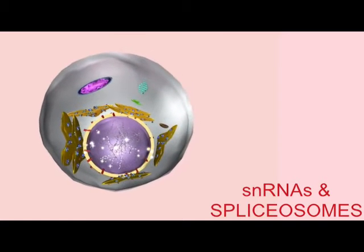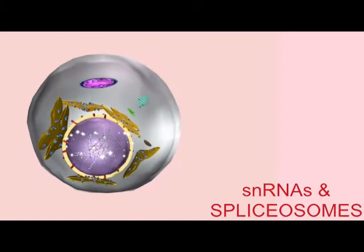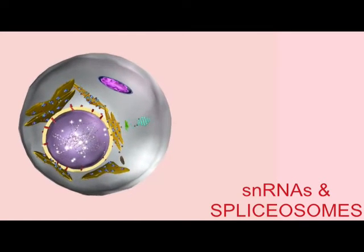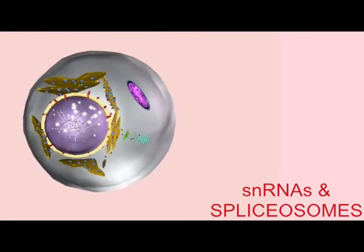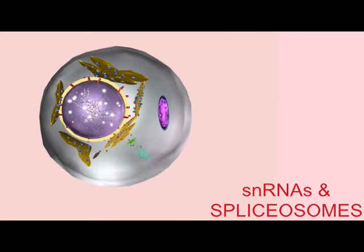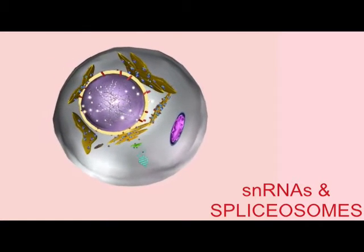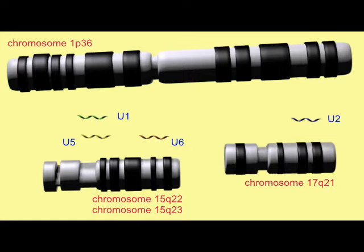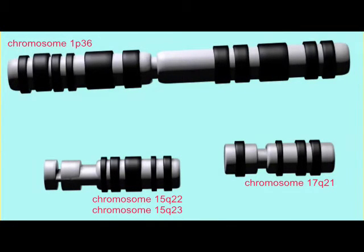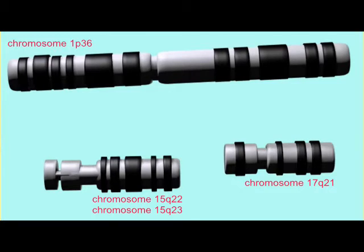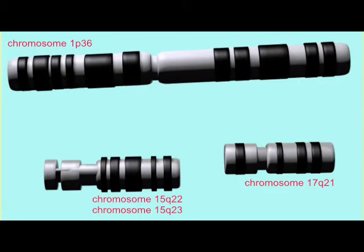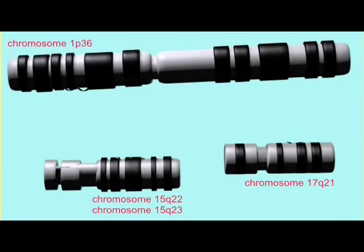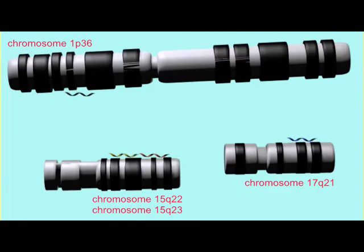All eukaryotes possess a number of small nuclear RNAs, which measure 80 to 350 nucleotides in length and are rich in uridine. These are never translated, but remain in the nucleus where they form part of the spliceosome. In the human genome, there are many snRNA genes, such as the genes for U1, which are concentrated on chromosome 1, in tandem arrays of genes with multiple copies in each array.